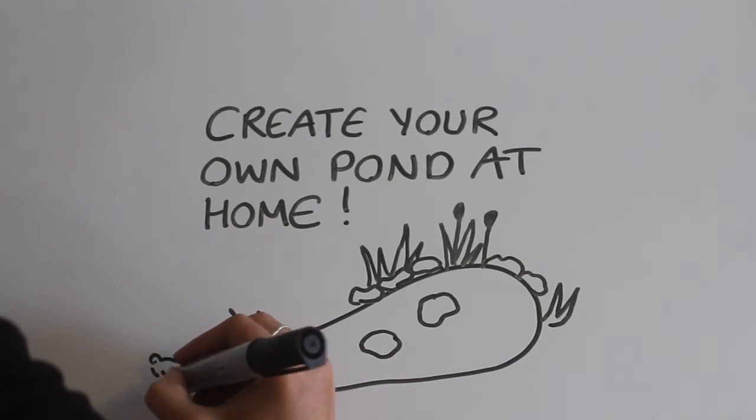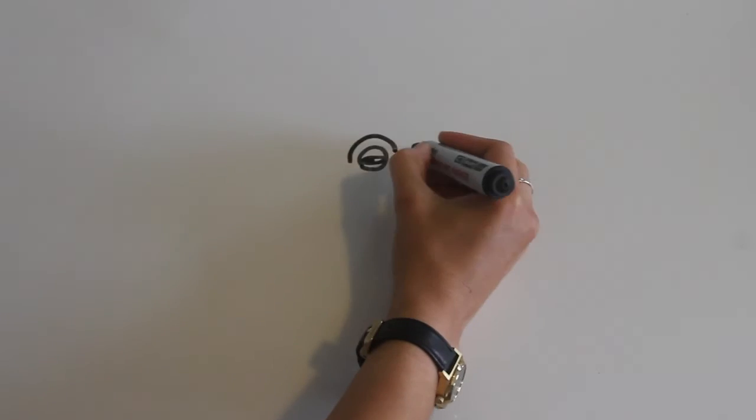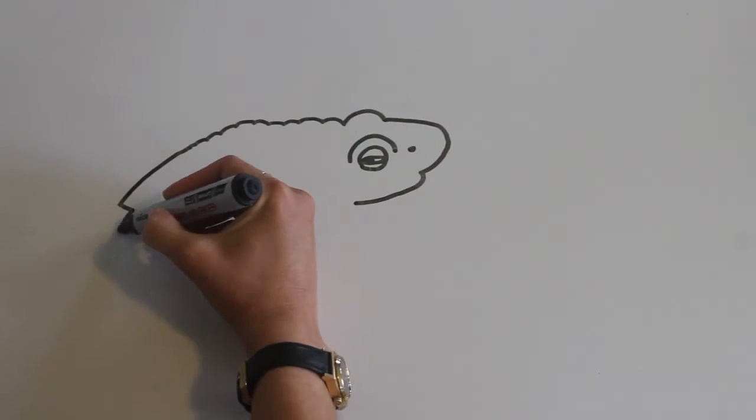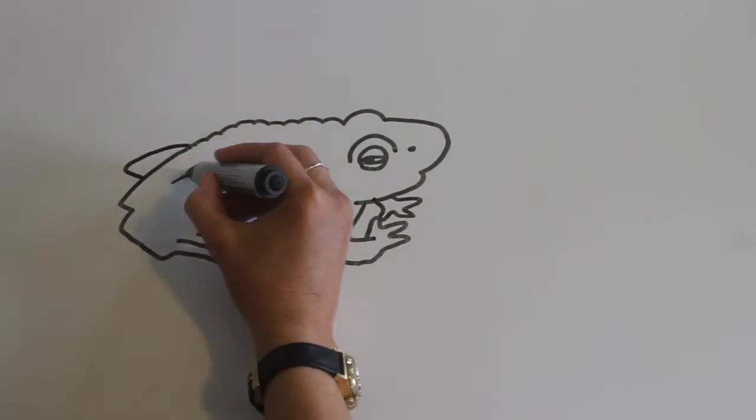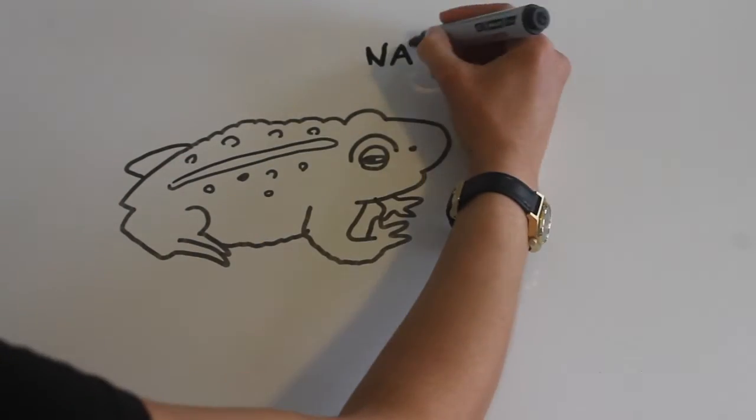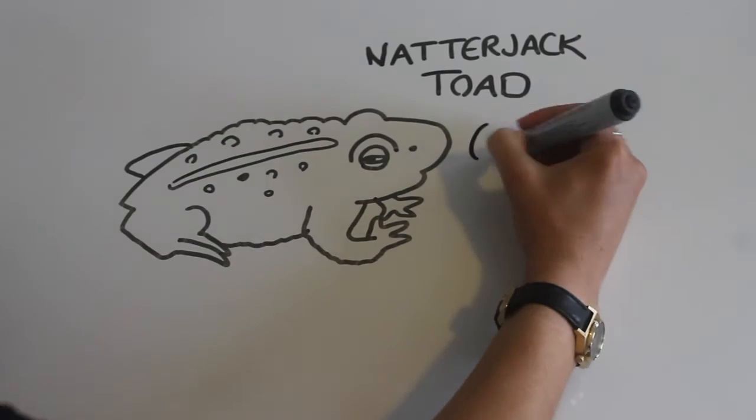By creating your own pond, you could help some of Britain's most threatened species. One of your new residents could be Europe's most noisiest amphibian. Like the common toad, it hibernates in winter and emerges late in the year, usually around April. This is the natterjack toad.